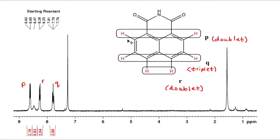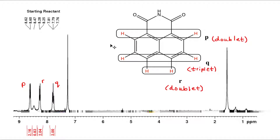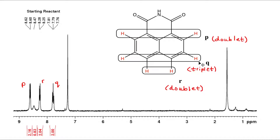I've drawn out all the protons of the molecular structure and boxed in the protons that are chemically equivalent to one another. I've also written down the multiplicity of each signal. For the P protons, we have one neighbor, so we expect a doublet. For the Q protons, it has two neighbors, so we expect a triplet. For the R protons, it has one neighbor, so we expect a doublet.